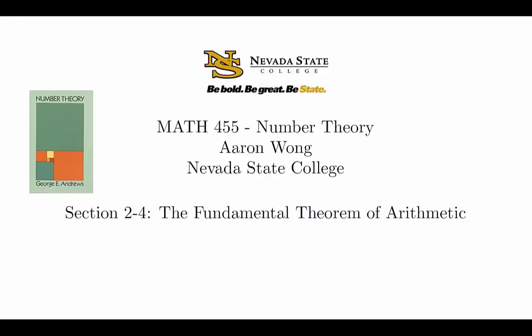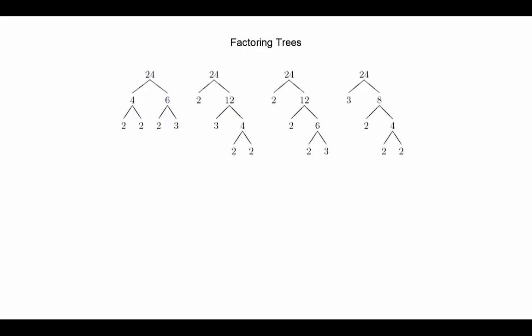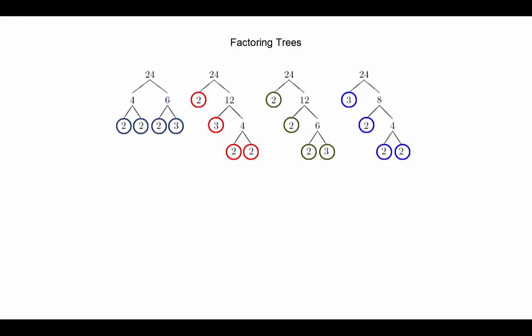The fundamental theorem of arithmetic is a fancy name for something you've probably known for most of your mathematical life. You might recall creating factoring trees from elementary or middle school math classes. These are diagrams where you start with a number and try to factor it into the product of two smaller numbers, and then repeat the process until you end up with numbers that no longer can be factored. Those numbers at the bottom are called primes, and this process yields the prime factorization of the initial number. One of the easily observed and easily overlooked features of this exercise is that no matter how you factor at each step, the final factorization is the same regardless of the path that you took.